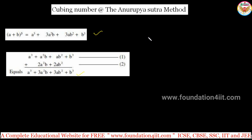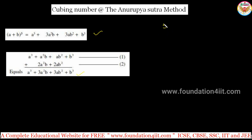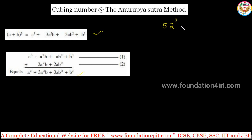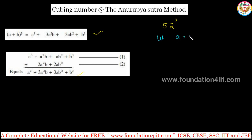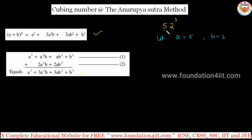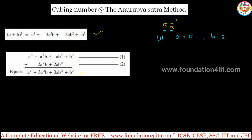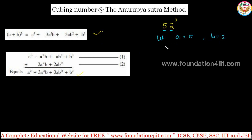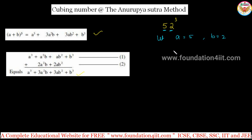Now let's apply this. For example, find 52³. In the number 52, the first digit is 'a' as 5 and the second digit is 'b' as 2. By looking at the number, first compute a³: 5 × 5 × 5 = 125. Single digit cubes are easy to remember, so write 125 first.